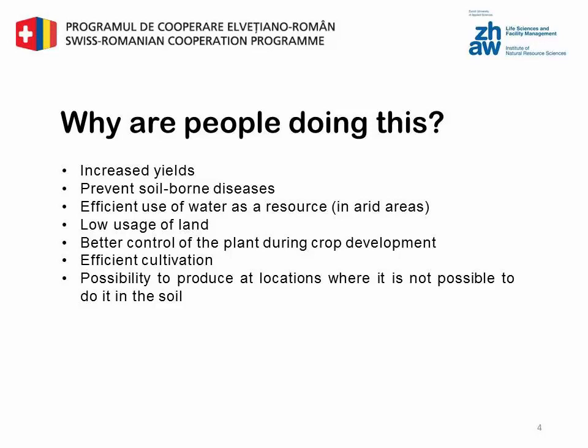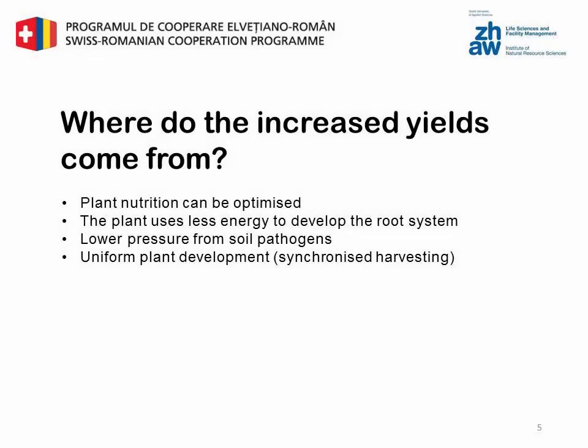Hydroponics allows growing at locations where it is not possible to grow plants in soil. Where do the increased yields come from? In hydroponic systems plant nutrition can be optimized for each crop separately. Because of this, the plant uses less energy to develop the root system and more energy to produce fruits, and there is uniform plant development and synchronized harvesting. There is also lower pressure from soil pathogens, or depending on the system, there is no possibility of soil pathogens entering the system.